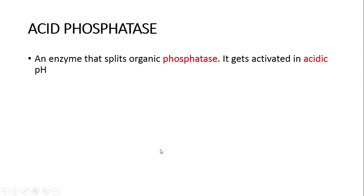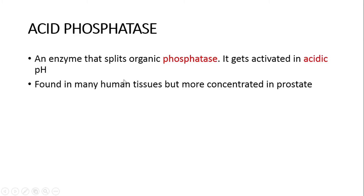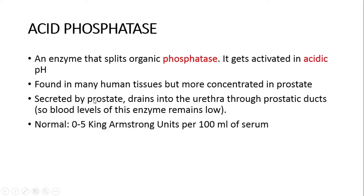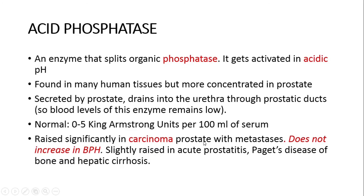Acid phosphatase is the enzyme that splits organic phosphate and is activated in acidic pH. It is found in many human tissues but is more concentrated in the prostate gland. It is secreted by the prostate and drains into the urethra through prostatic ducts, which is why its blood level is normally very low. The normal acid phosphatase level is 0 to 5 King-Armstrong units per 100 ml of serum. It is raised significantly in carcinoma prostate with metastasis, but does not increase in BPH. It is slightly raised in acute prostatitis, Paget's disease of bone, and hepatic cirrhosis.